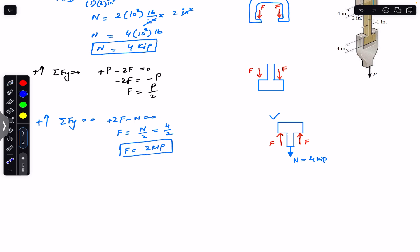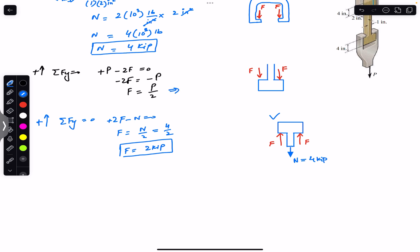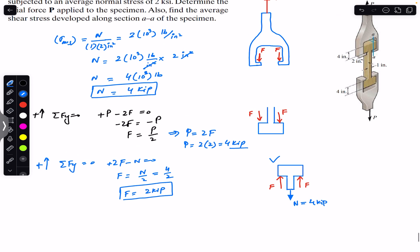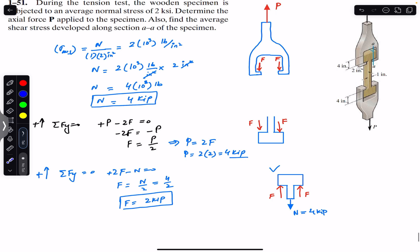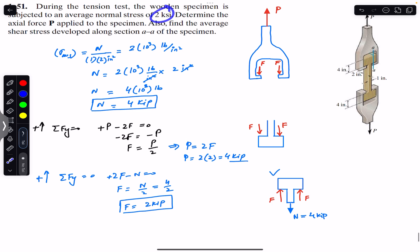Since F equals 2 kips, we can now find force P. From the equilibrium equation P = 2F, so P = 2 × 2 = 4 kips. This means that if the average normal stress in the cross-section is 2 ksi, then an axial force of 4 kips must be applied.